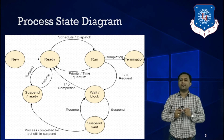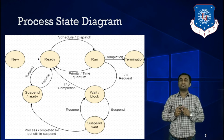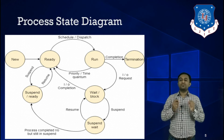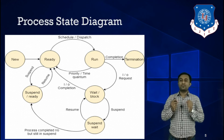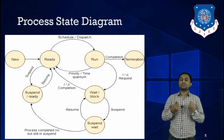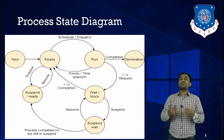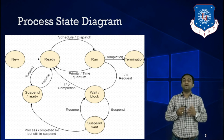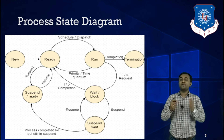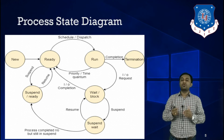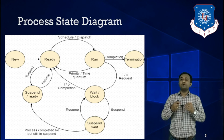There are two types of processes in an operating system: CPU-bound processes, which require more time in the CPU for execution, and I/O-bound processes, which require more time on I/O devices. If we have many I/O-bound processes, there are chances the Waiting state becomes fully occupied, and if more processes request I/O services, memory will be full.